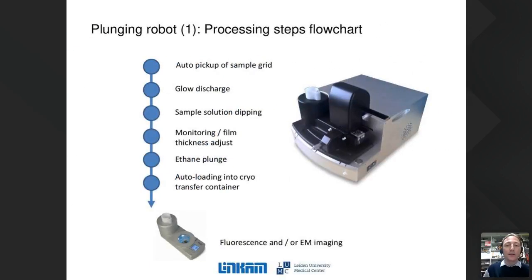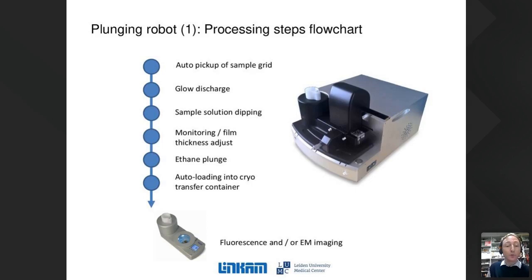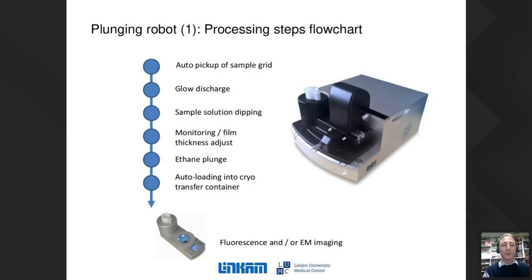We have designed and implemented a device where many of these tasks are automated, using a fundamentally different process to adjust the film thickness before plunging. The steps are: automatic pickup of the sample grid, glow discharge to make it hydrophilic, applying sample by dipping into a sample solution or pipetting, monitoring the sample with a real-time built-in optical microscope, adjusting the film thickness, plunging in liquid ethane, and automatically loading into a cryo transfer cartridge for processing.